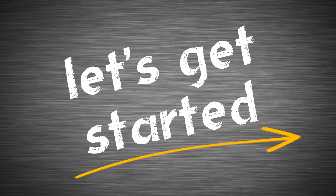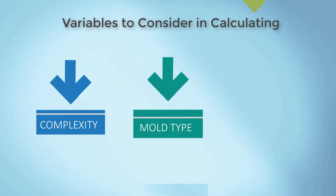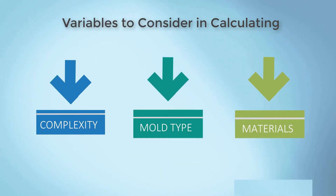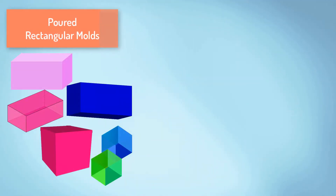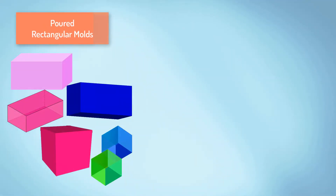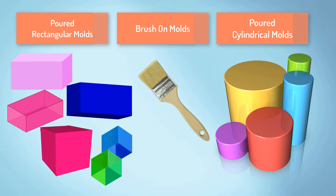There are a number of variables to consider, including complexity of the model or pattern, the type of mold being made — such as poured versus brush-on — and the type of mold material used. So we'll break down this explanation into three mold types: poured rectangular molds, poured cylindrical molds, and brush-on molds.